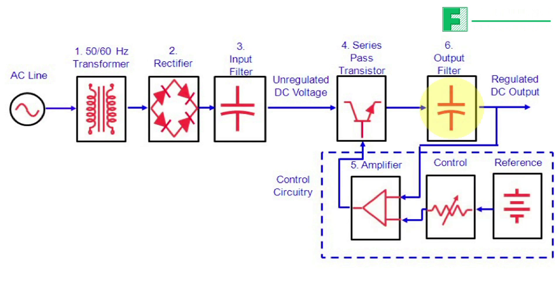Finally, an output filter capacitor further reduces AC output noise, ripple, and lowers output impedance for an ideal voltage source.